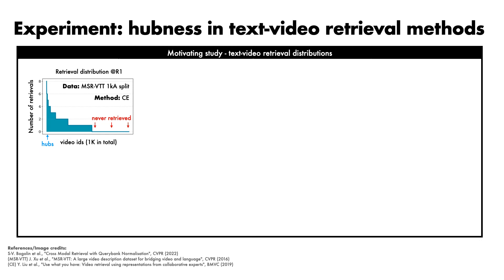Two extra comments are in order. First, we are plotting retrievals under the criterion of appearing as the top-ranked result, rather than in the top k results as done in previous works — the latter choice produces more extreme distributions, but is a little less intuitive. Second, it's important to ask what this graph would look like without hubness. A method that randomly selected uniformly from the gallery would produce a curve that is flatter than this one. Thanks to the binomial distribution, it is highly improbable for a single video to be retrieved 8 times by chance. By contrast, a perfect retrieval method for this dataset would produce a flat plot with one retrieval per video.